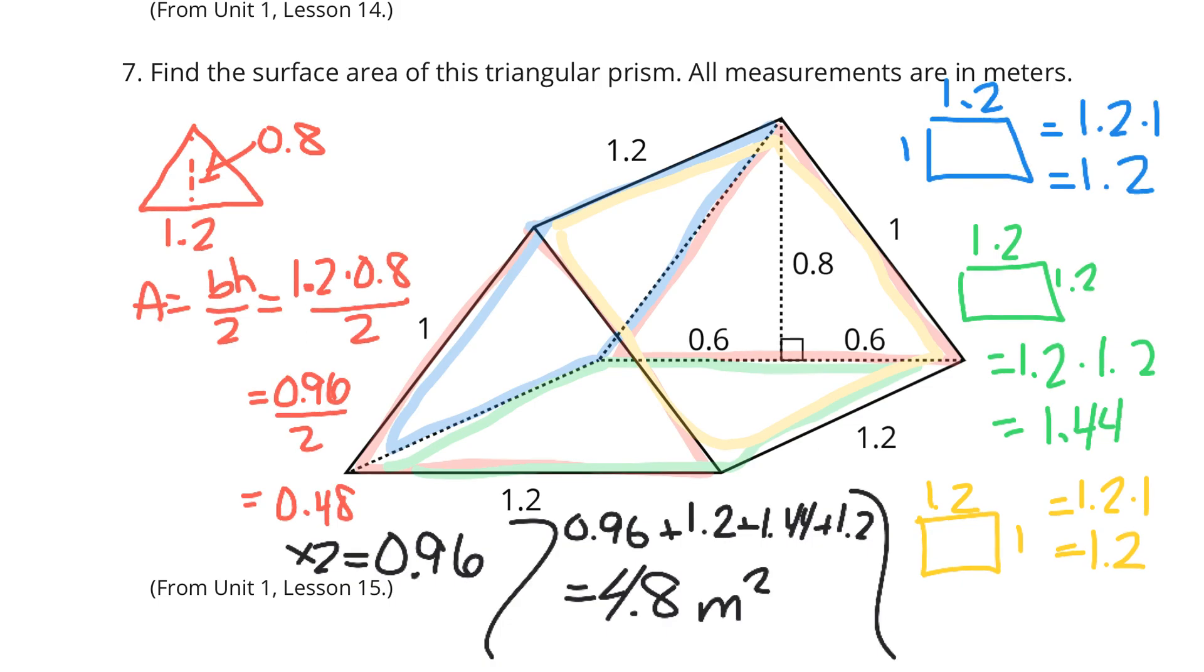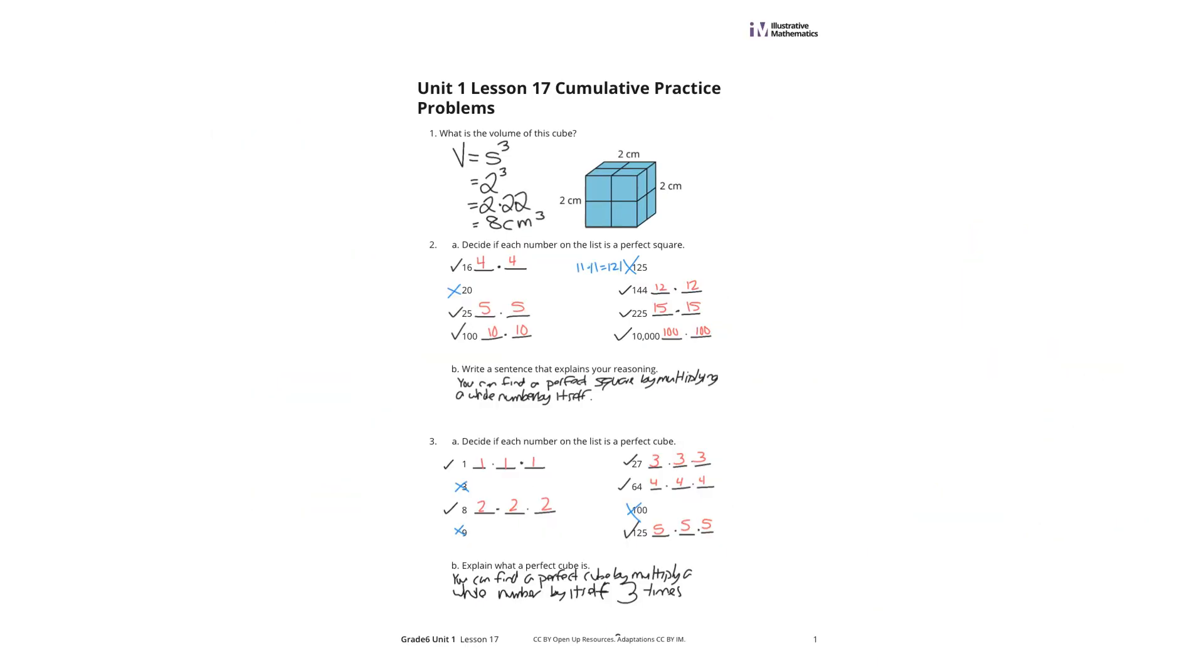So, the key with this one, I would strongly recommend drawing these shapes out. If you want to use highlighters, if you want to use different colors, that way you can visualize exactly what's going on here. And that is it for this Grade 6 Unit 1 Lesson 17 Practice Problems Review. Good luck!